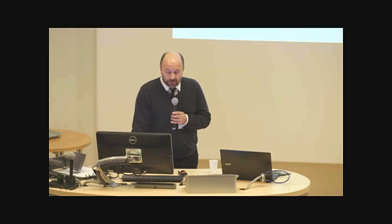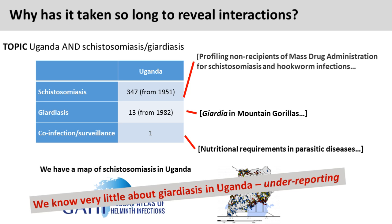Is there a problem in Uganda? If we search the literature, there's a massive literature on schistosomiasis in Uganda - a quick search yields 345 publications from 1951 onwards. Giardia, not so much, and co-infection surveillance, hardly anything at all. A recent paper on schistosomiasis looks at mass drug administration access and refusals. Interest in Giardia in Uganda is not from a human side; it's looking at the zoonotic potential in animals such as gorillas. The one co-surveillance study is actually just a generic review of parasitic diseases with regard to nutrition.